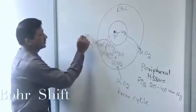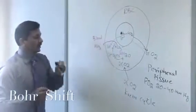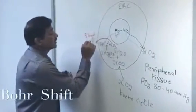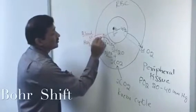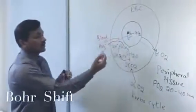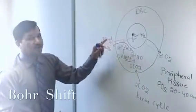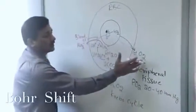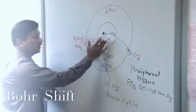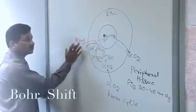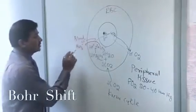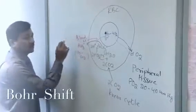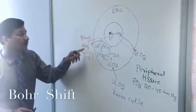Bicarbonate is a negative charge coming out of the red blood cell. To maintain charge equality, chloride is getting in. Whenever bicarbonate is coming out, chloride is getting into the red blood cells — this is called the chloride shift. So the hemoglobin molecule in the peripheral tissue has released four molecules of oxygen for every two protons binding, and two bicarbonates are coming out. This is how 90% of your carbon dioxide is carried back to the lungs in the blood in the form of bicarbonate.